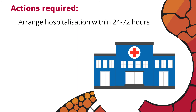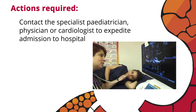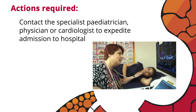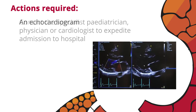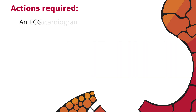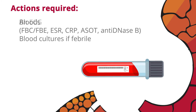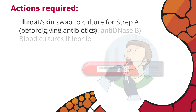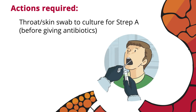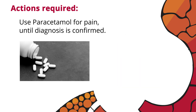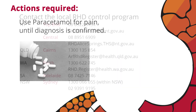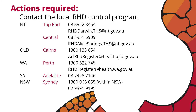Actions required for all people suspected to have ARF: arrange hospitalisation within 24 to 72 hours. Contact the specialist paediatrician, physician or cardiologist to expedite admission to hospital. Organise an echocardiogram, an ECG, and bloods including FBC, FBE, ESR, CRP, ASOT and anti-DNase B. Take blood cultures if febrile. Take a throat or skin swab to culture for Strep A before giving antibiotics. Use paracetamol for pain until diagnosis is confirmed. Contact the local RHD control program.